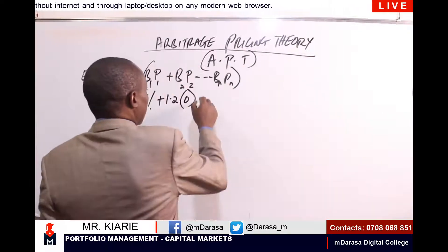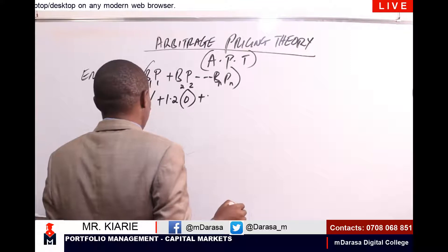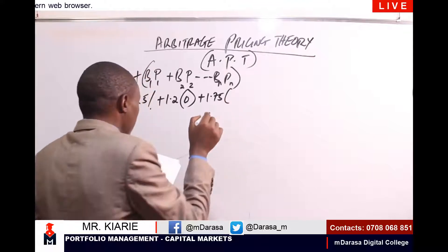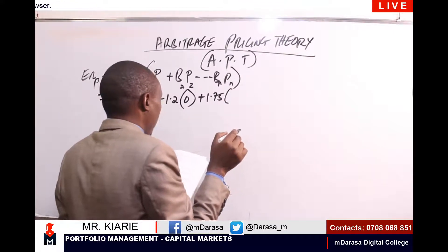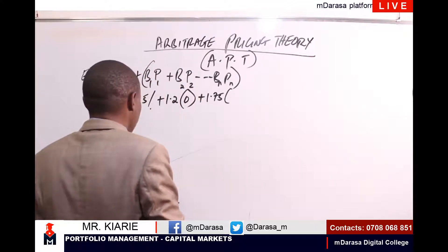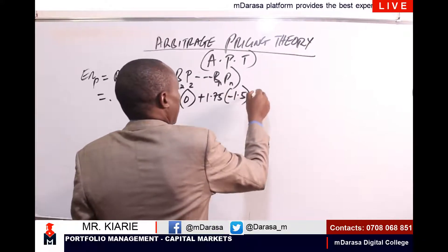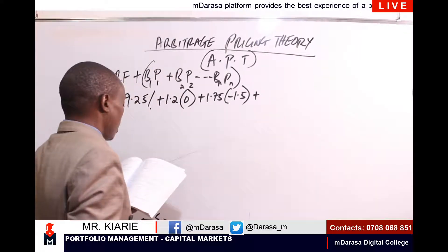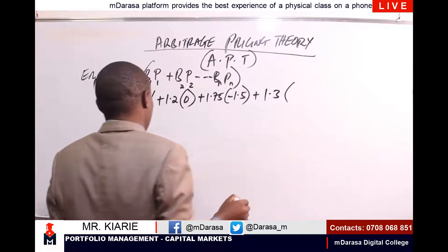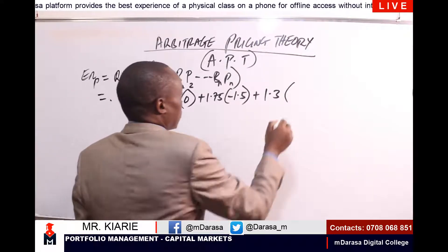For the next factor, the beta is 1.75 multiplied by the risk premium, which is 5 minus 7, giving negative 1.5. Then we add the next factor where the beta is 1.3, multiplied by the risk premium which is 7.75 minus 9, giving negative 1.25.